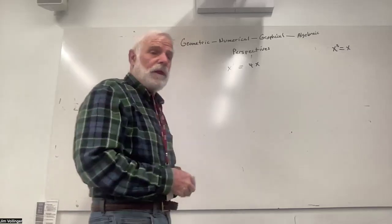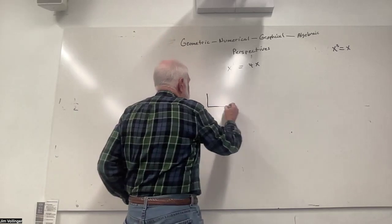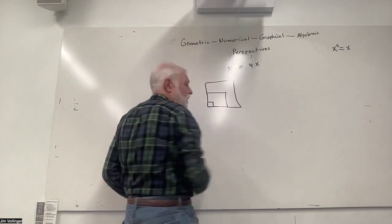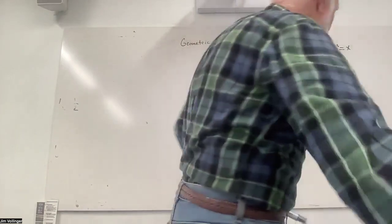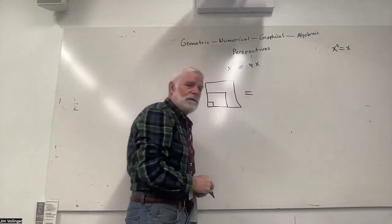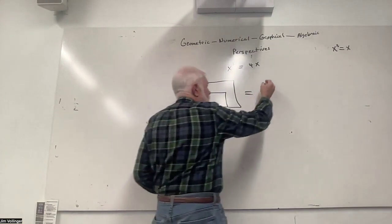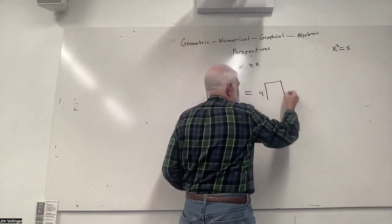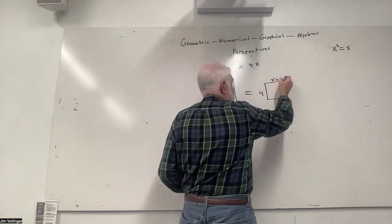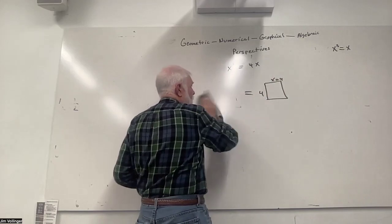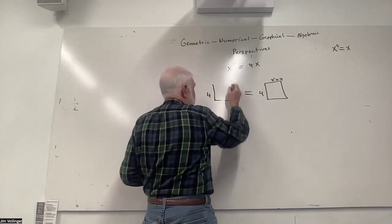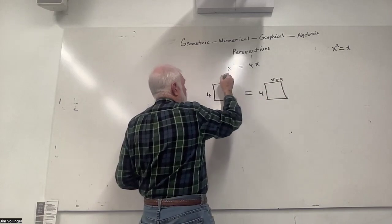I believe x squared is a shape — it could be a big square or a little square, but it's a square. And if something equals something, I need to make the shape of a square on this side too. Four times x can give me one square, and the only way this is a square is if x equals four — because for something to be a square, it's got to be four times four.